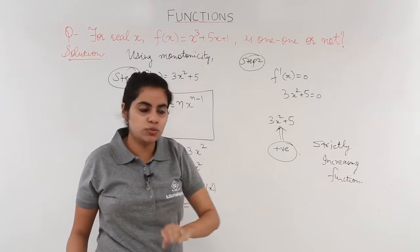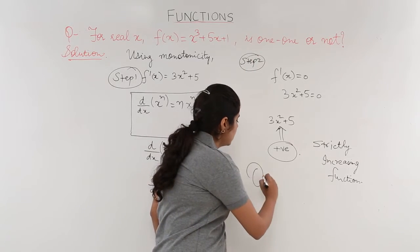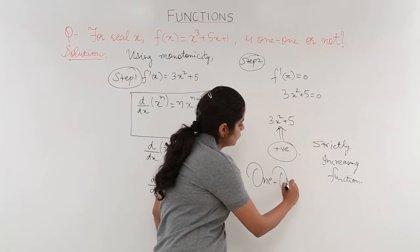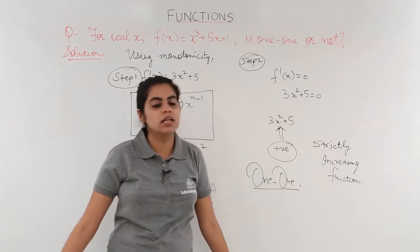And because of the concept of monotonicity, either it should be increasing or it should be decreasing. If it happens, it is a one-to-one function. So hence, it is a one-to-one function.